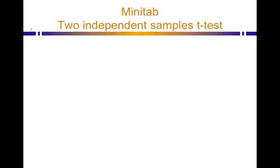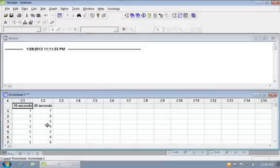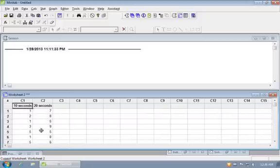Now we're going to go to Minitab and see how we can run two-sample independent samples t-tests for the data that we have. Well, here we are at Minitab, and here's our data over here on the left two most columns, C1 and C2. We have 20 data points for a 10-second cooldown and 20 data points for a 20-second cooldown.